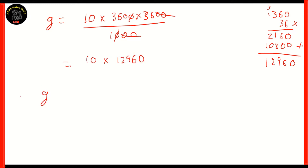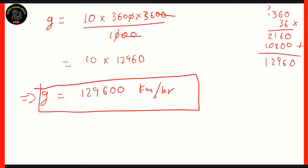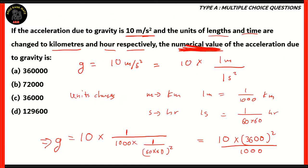So, the acceleration due to gravity will be numerically equal to 129,600 kilometers per hour. So, therefore, the acceleration due to gravity in kilometers per hour is 129,600. And which of these is equal to 129,600? That is option D.